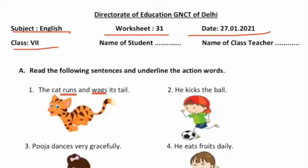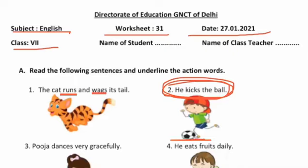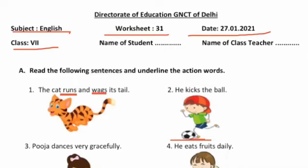Now the next sentence is: 'He kicks the ball.' Woh ball ko kick karne ka kaam kar rahe hain. To action word kya ho gayi isme? Isme ho gayi 'kicks'. So we'll underline the word 'kicks'.